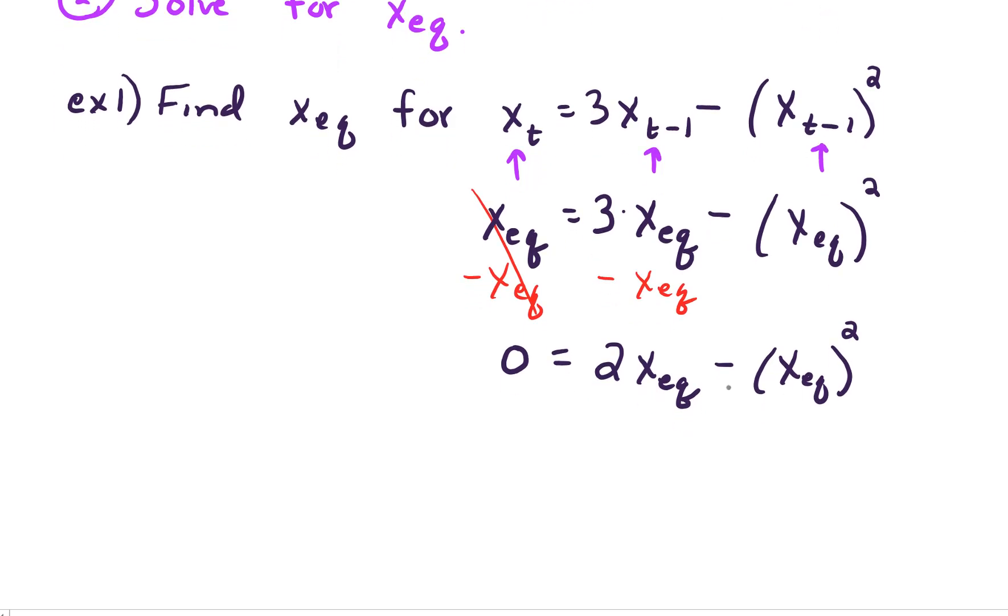Now we want to solve. So we have a common factor on the right hand side. Let's pull out the common factor x sub eq. And after we do that we're left with 2 minus x sub eq. Setting each factor equal to 0 we find our equilibrium points are 0 or 2.